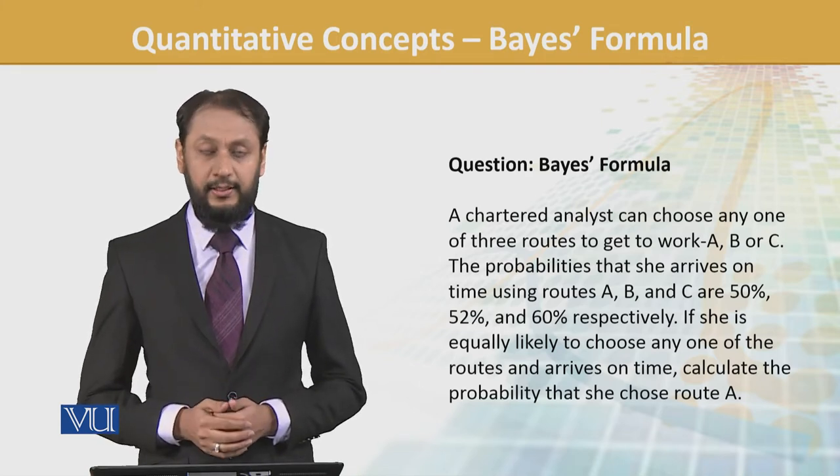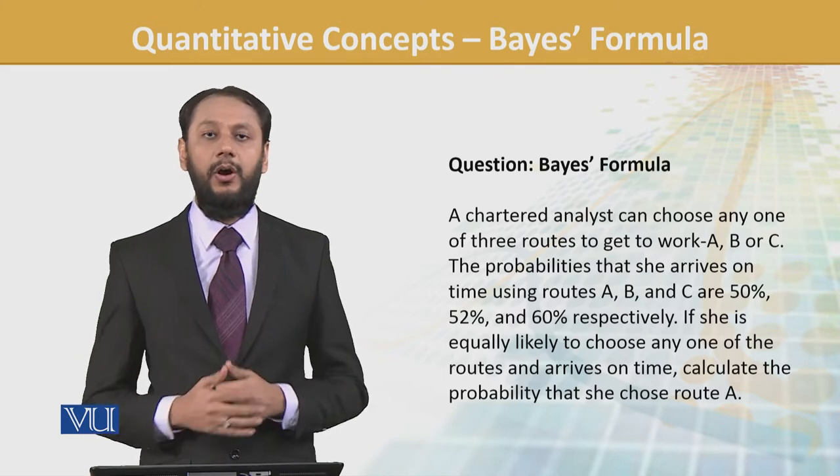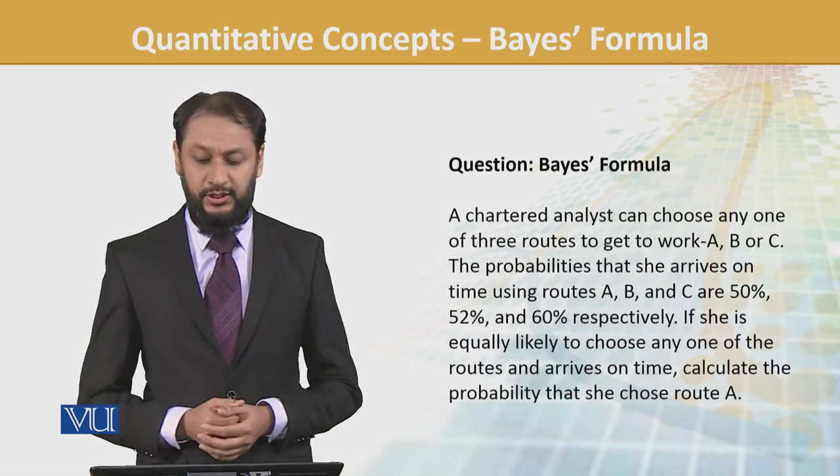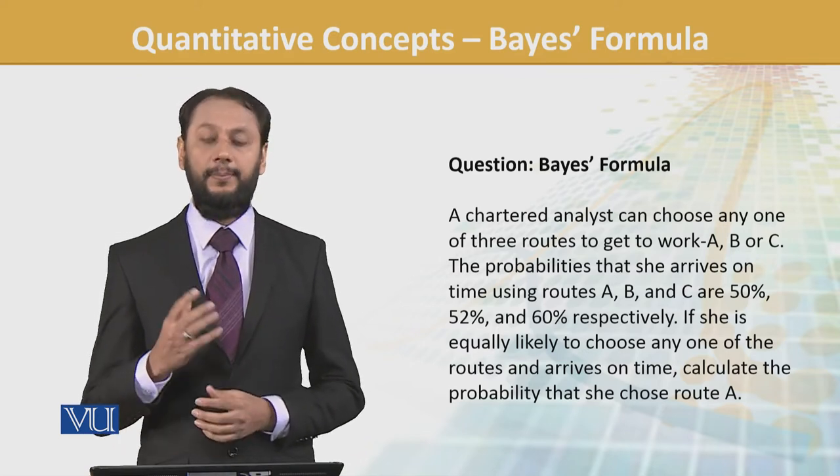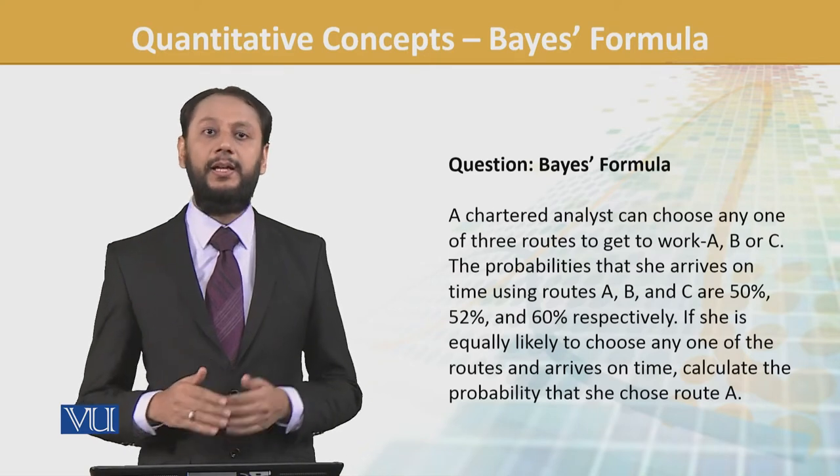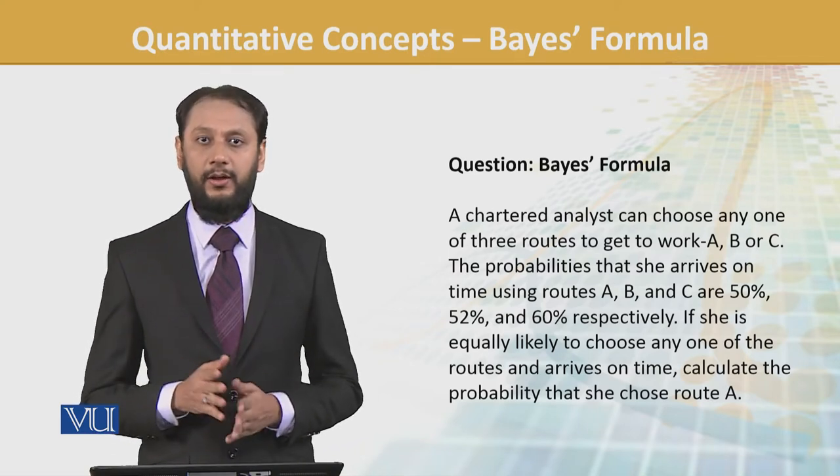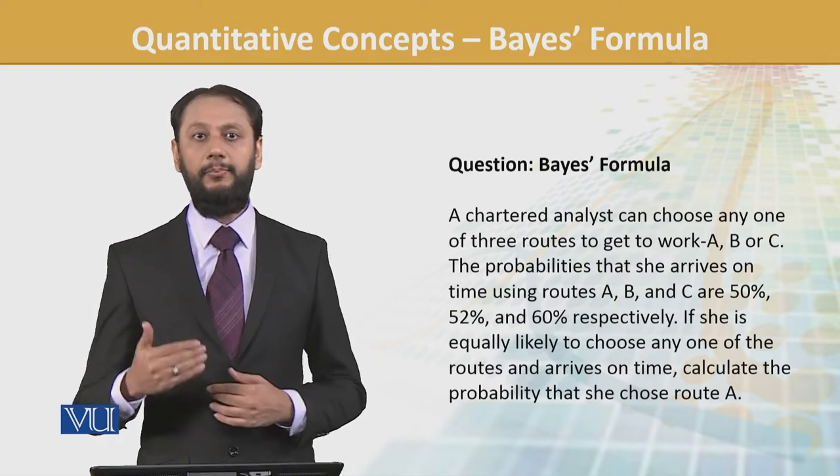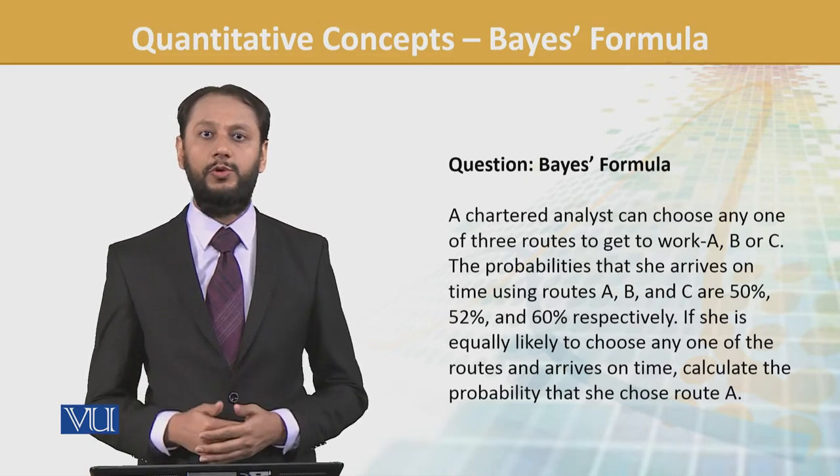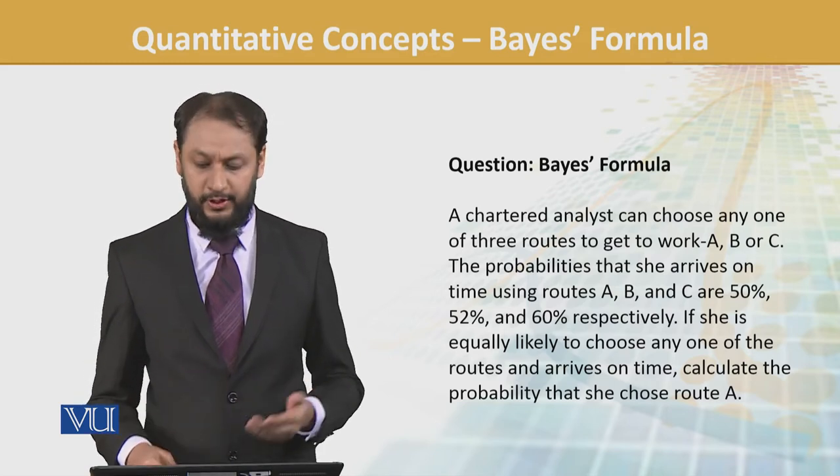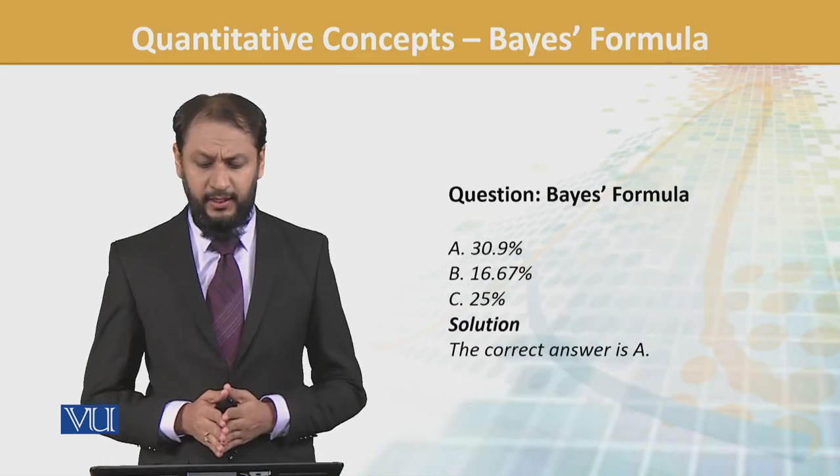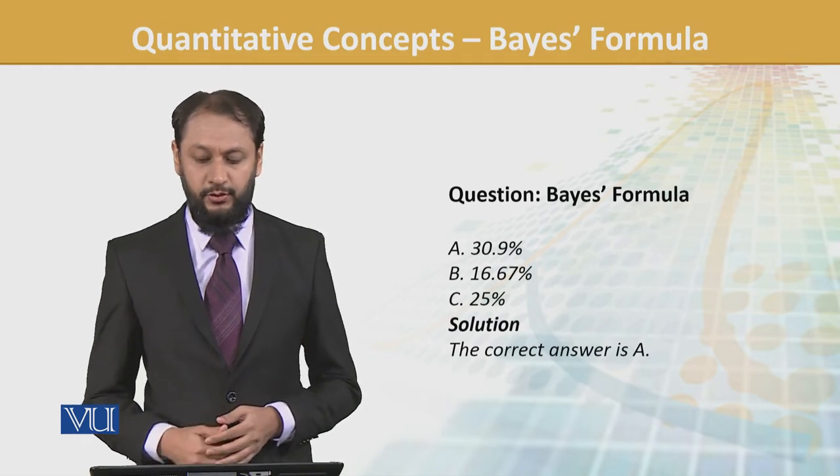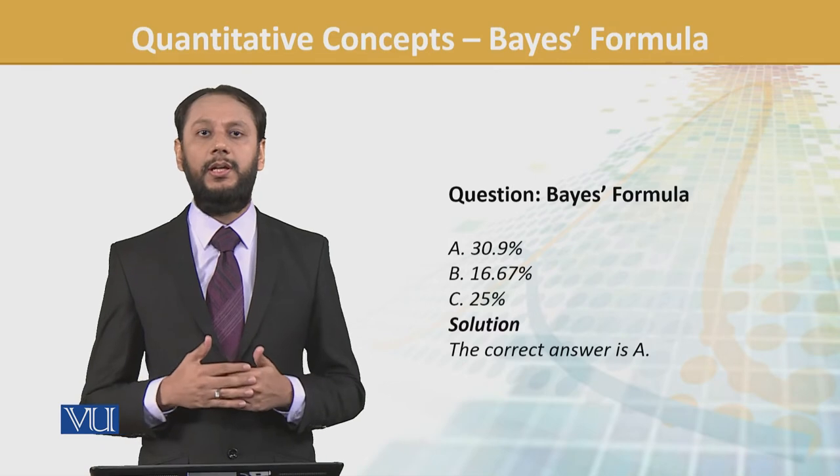If she is equally likely to choose any one of the routes and arrives on time, calculate the probability that she chose route A.